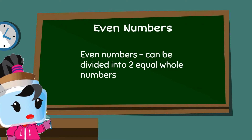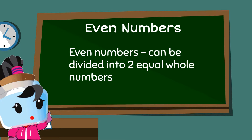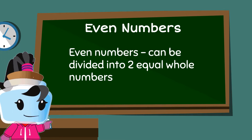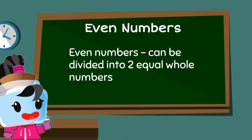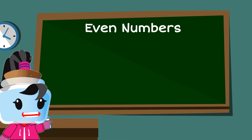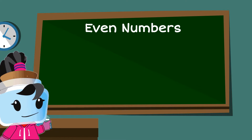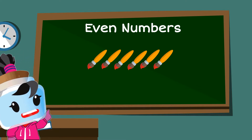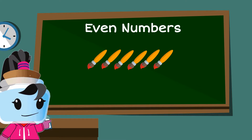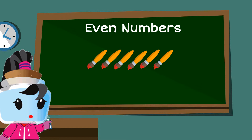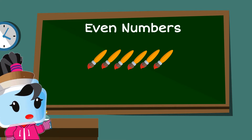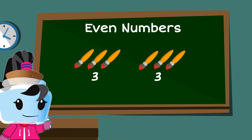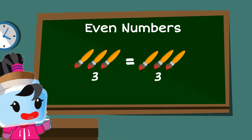A number is even when you can divide it into two equal whole numbers. For example, these six paintbrushes are even in number because we can divide them into two groups with three paintbrushes each.